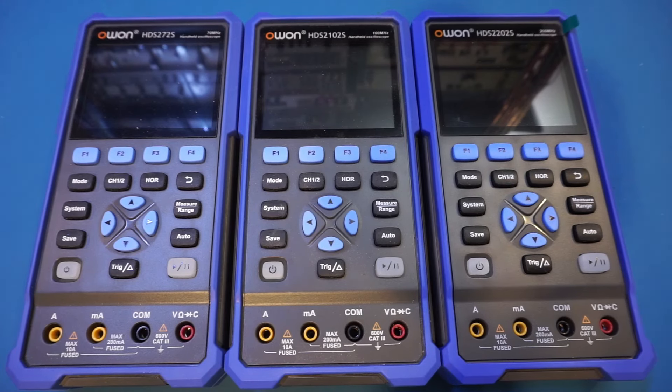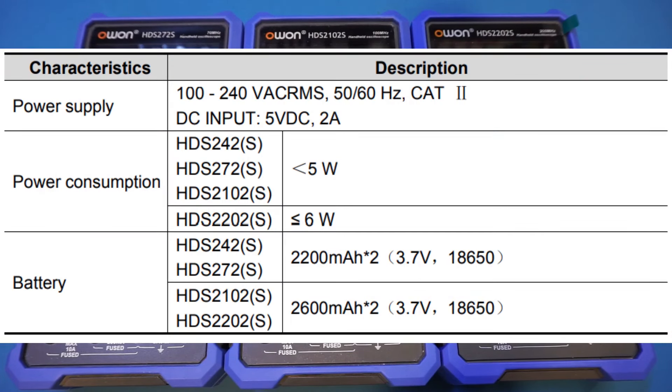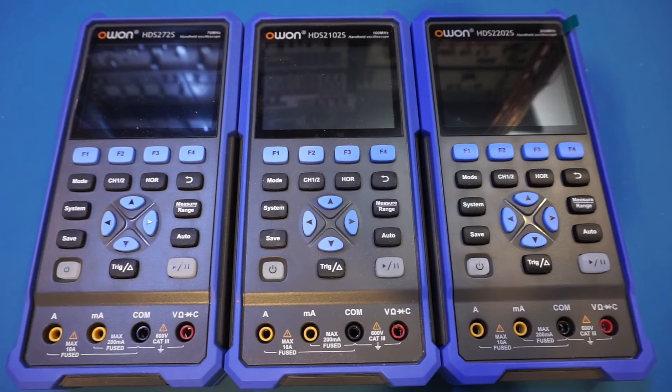Another minor difference I spotted is the power consumption. The 2202 is definitely more power-hungry compared to its predecessors, which is not surprising given the higher performance. I actually didn't notice in my previous reviews that the capacities of the batteries provided are different depending on the model. By the look of it, the 2202 uses the same 2600 mAh 18650 cells as in the 100 MHz version, whereas the 272 uses two 2200 mAh cells. Anyway, besides power consumption, the sampling rate and the specs related to the bandwidth, all other specs are exactly the same across the entire HDS200 series.